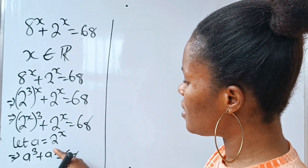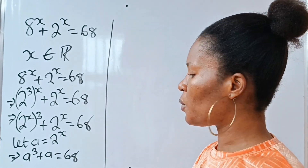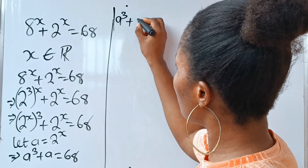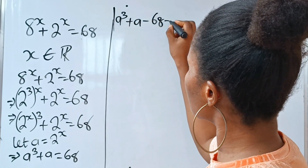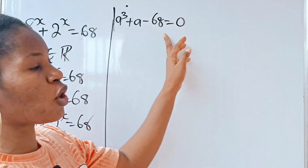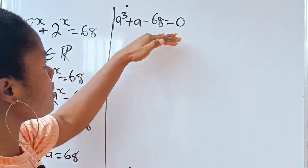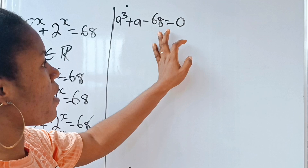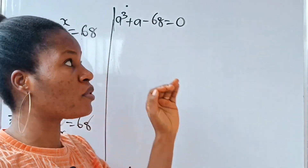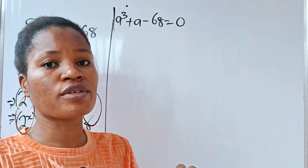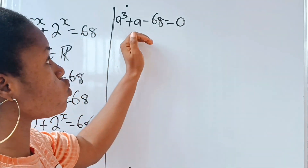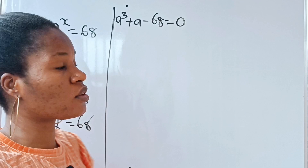Now let's bring the 68 to the other side of the equation. So we have a to the power of 3 plus a minus 68 is equal to 0. This is a cubic polynomial and we are going to solve it using the factorization method — specifically, the synthetic division method — to bring out the other factor.